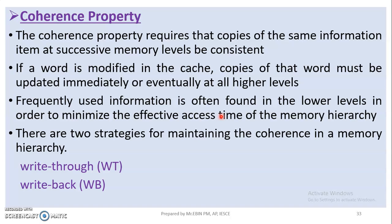The next property is the Coherence property. Coherence property requires that copies of the same information items at successive memory levels be consistent. When data is stored in memory and we are using it, there can be an inconsistency problem — this is called the cache coherence problem.